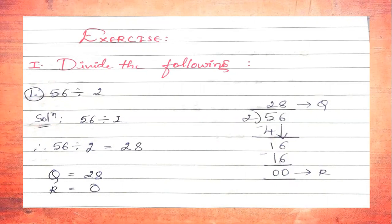For the given number 56 divided by 2: dividend is 56, divisor is 2, remainder is 0, and quotient is 28. Therefore, 56 ÷ 2 = 28, where Q = 28 and R = 0.